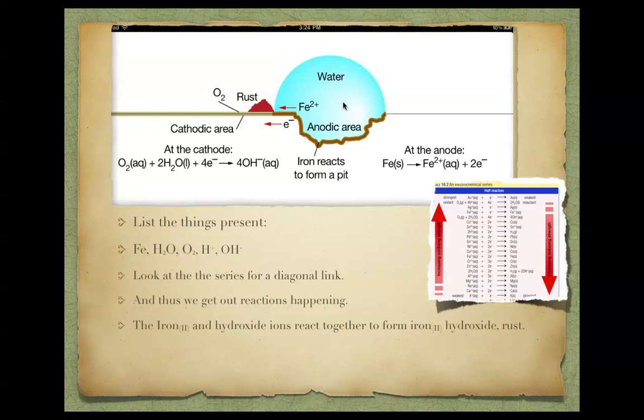Now, the reason we get corrosion happening is because of the iron being eaten away and forming our iron 2 plus here, and that's why we get corrosion. That's why it weakens the iron metal.